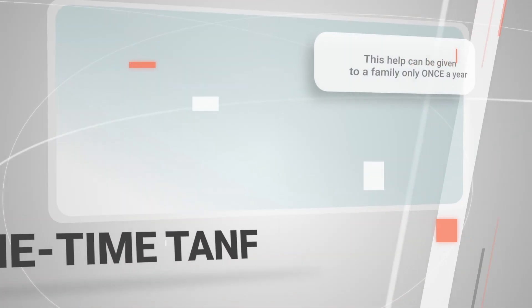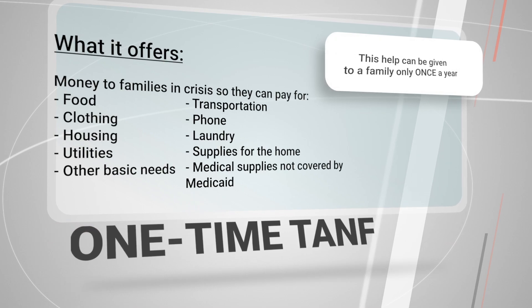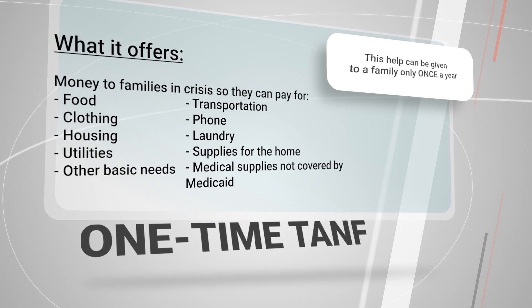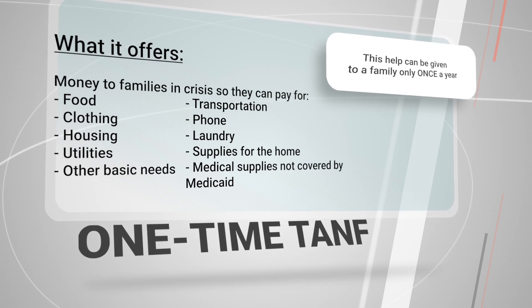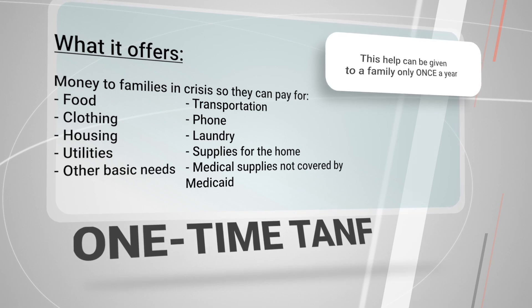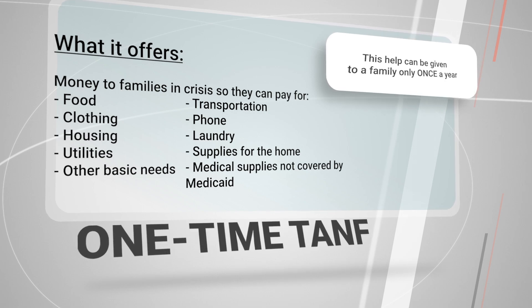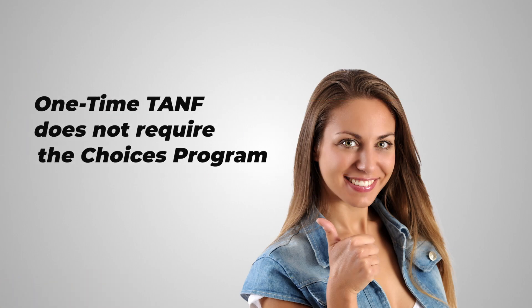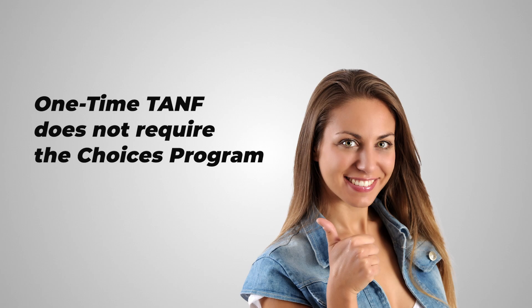You may be eligible for a one-time TANF. A one-time TANF is for families in crisis who do not have a lot of money and have children under the age of 18. These crises can include losing a job, losing a home, or a medical emergency. This help can only be given to a family once per year. One great benefit is that once you receive a one-time TANF, you're not required to participate with the Choices Program.